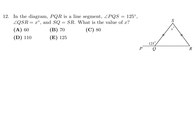In the diagram, PQR is a line segment and angle PQS is 125 degrees, angle QSR is x, and QS equals SR. What is x? This angle is going to be 180 minus 125 which is 55 degrees. Since QS and SR are the same, that's an isosceles triangle, and therefore that angle is also 55 degrees.